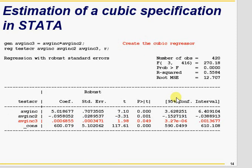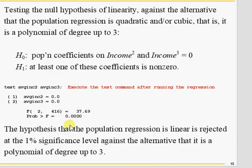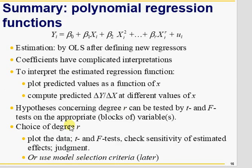The cubic model also has a very significant coefficient, so there is a close match between the quadratic and cubic models, while the linear model is rejected. Whether to retain the cubic or quadratic model is a judgment call — statistically the cubic seems better, but common sense can guide the decision. Using an F-test for coefficient restrictions, we fail to reject that the income squared and income cubed coefficients equal zero in the linear model, so we prefer the cubic or quadratic model over the linear one.